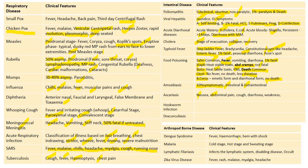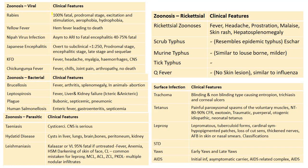For dengue syndrome, we have fever, hemorrhage, and hemorrhage with shock as different grades of dengue fever. For malaria, we have cold stage, hot stage, and sweating stage, associated with fever, chills, and rigors. Lymphatic filariasis infects the lymphatic system causing a disabling disease; occult filariasis will also be present. Zika virus presents with fever, rash, malaise, myalgia, and headache.